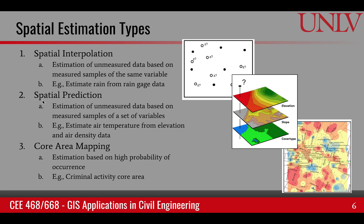That's not the case in spatial prediction. In spatial prediction, we use a set of variables to find an unmeasured data value. For example, we might be interested in the air temperature at a point, and it may be related to other variables used to predict its value. If we measure air temperature using elevation and air density, that would be spatial prediction. If we measure air temperature using air temperature at other locations, that would be interpolation. So in prediction, we are using other variables to measure a variable of interest.